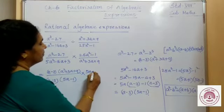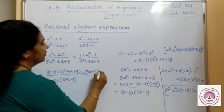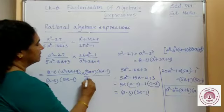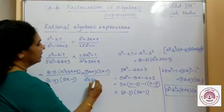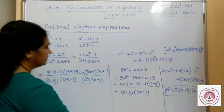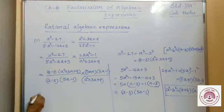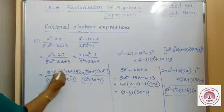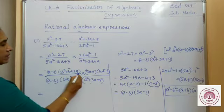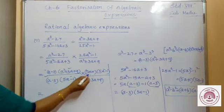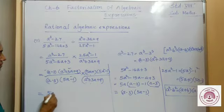So, we have (5a + 1)(5a - 1) for 25a² - 1, and (a² + 3a + 9) remains as it is. Now, cancellation: (a - 3) gets cancelled, (5a - 1) and (5a - 1) get cancelled, and (a² + 3a + 9) gets cancelled. The remaining term is (5a + 1).